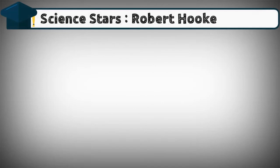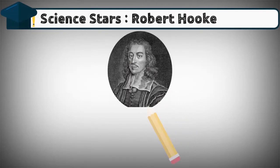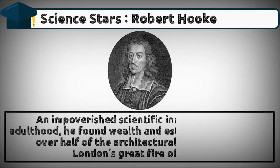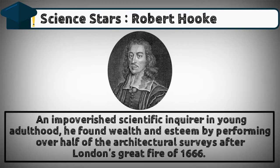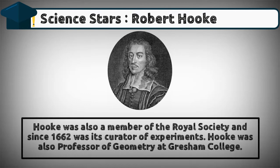Robert Hooke was an English scientist and architect — a polymath recently called England's Leonardo — who, using a microscope, was the first to visualize a microorganism. An impoverished scientific enquirer in young adulthood, he found wealth and esteem by performing over half of the architectural surveys after London's Great Fire of 1666.